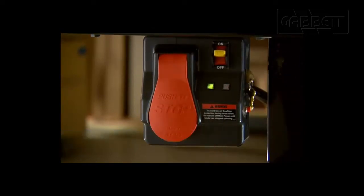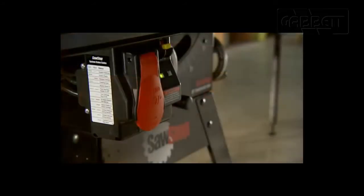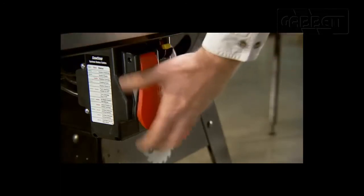The bypass function must be engaged each time the blade is turned on, preventing unintended use of the saw without the safety system enabled. You can easily disable the main power switch entirely by removing the yellow key. Finally, the large start-stop paddle provides hands-free shutoff, allowing you to safely stop the blade even when both hands are busy.